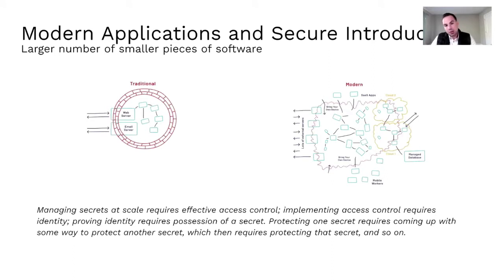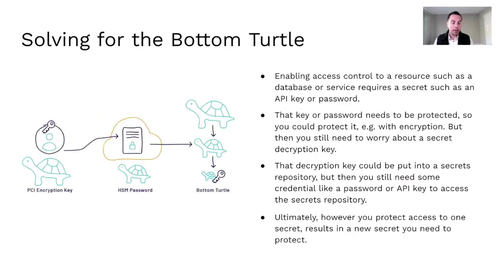To set the stage, the problem that SPIFFE/SPIRE solves is that of secure introduction. Modern applications are composed of a larger number of smaller pieces of software. Managing secrets at scale requires effective access control, and implementing that access control requires a strong bedrock of identity. Proving identity has required possession of a secret. The challenge is protecting one secret requires coming up with some other way to protect that secret, which then requires protecting that other secret, and so on — what Ian Hocken from Netflix refers to as infinite regression, or solving the bottom turtle.